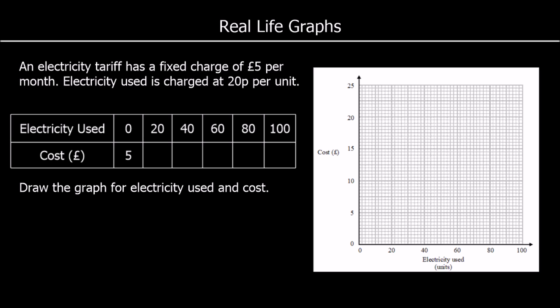And another question. An energy tariff has a fixed charge of £5 per month. Electricity used is charged at 20p per unit. So for electricity, there's a fixed charge of £5 and then 20p for every unit used.